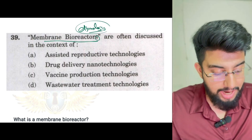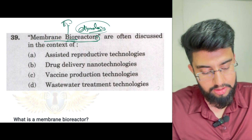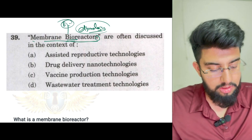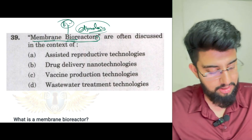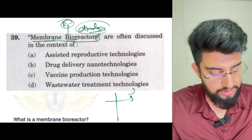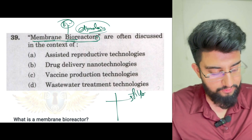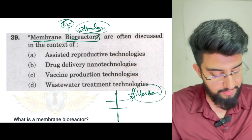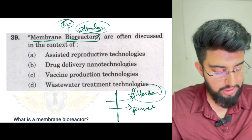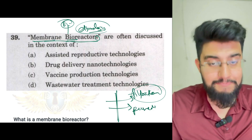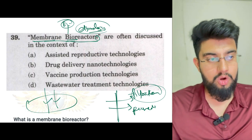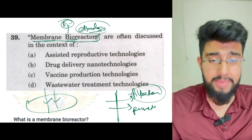Membrane bioreactors — so 'bio' has something to do with biological beings. 'Membrane' — usually a membrane is used in filtration. There is a membrane which is permeable to something and impermeable to others. You have a membrane: some things will pass, some things will not. Basic knowledge about what a membrane is.